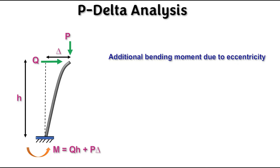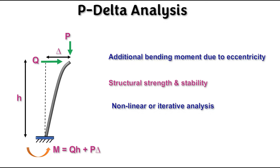This redistribution of forces affects the structural strength and stability. To ensure structural strength and stability, we need to perform P-delta analysis to make the structure stable. P-delta analysis is typically performed using numerical methods such as finite element analysis, where the non-linear behavior of the structure is iteratively analyzed to capture the interaction between axial load and lateral displacement. Therefore, P-delta analysis can be called a non-linear analysis or iterative analysis.